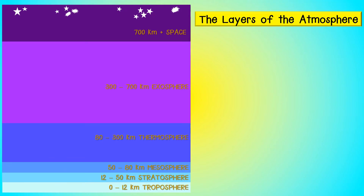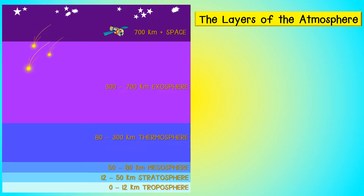The atmosphere extends approximately 700 km from the surface of the Earth and consists of different layers. Space is beyond 700 km — this is where many satellites orbit the Earth, helping with communications and scientific research. The exosphere extends from 300 to 700 km and is where meteorites enter the atmosphere. The thermosphere, mesosphere, stratosphere, and troposphere are closer to the Earth's surface.